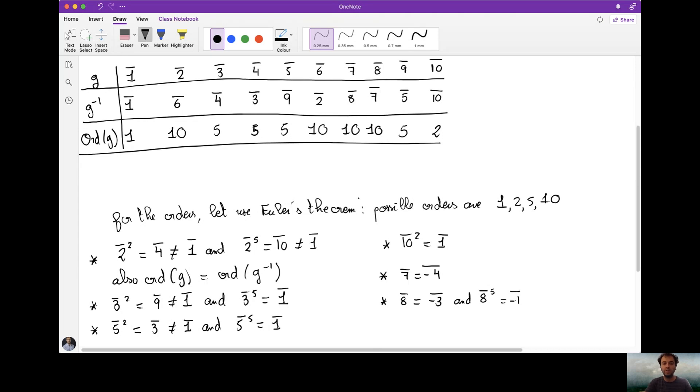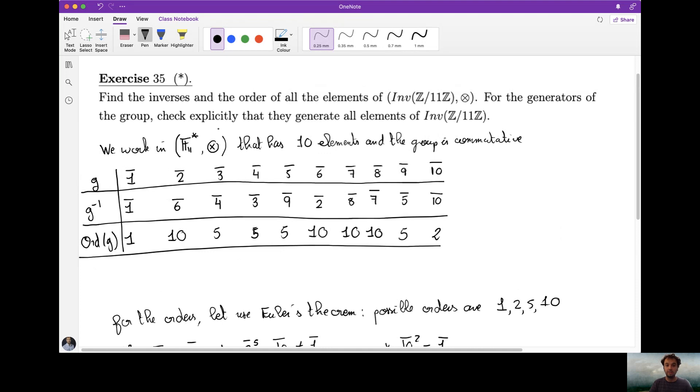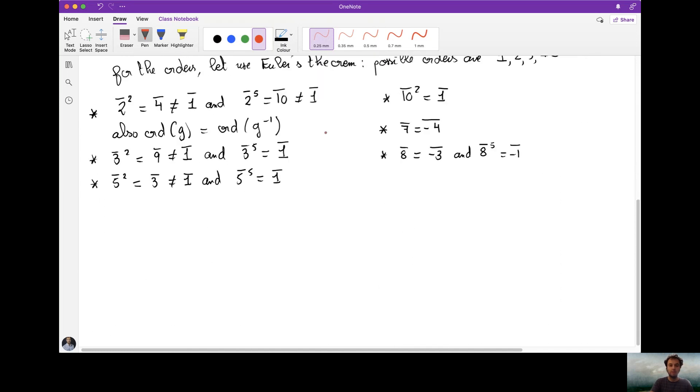Good. So now we've found the orders of all elements, and we see that this group is cyclic. As if you read the lecture notes, you know that whenever the modulo we're working with is a prime number, the group of invertible elements with multiplications is always a cyclic group, and it has 4 generators. The generators are 2, 6, 7, and 8. So to end the exercise, it asks that for the generators, check explicitly that they generate all elements, so let's do this in the table.